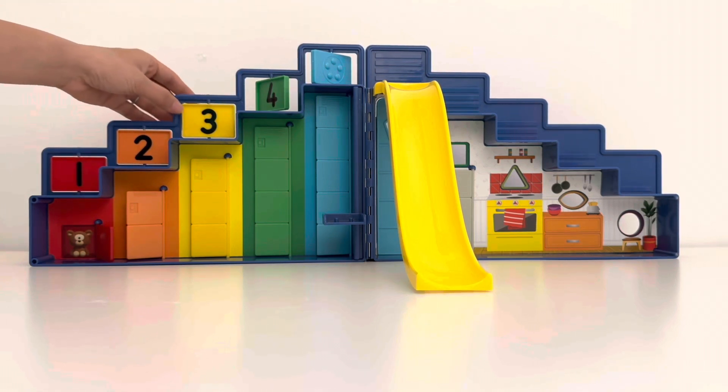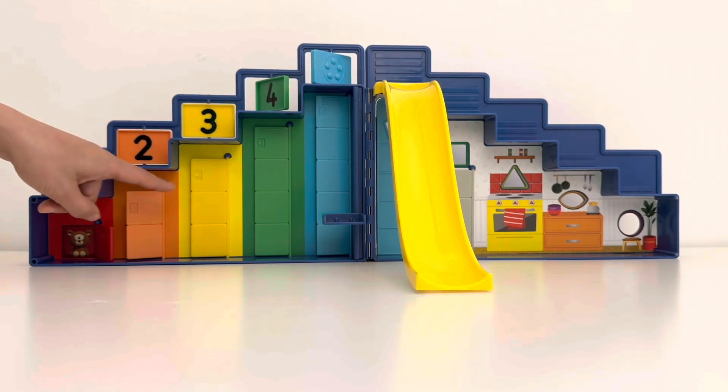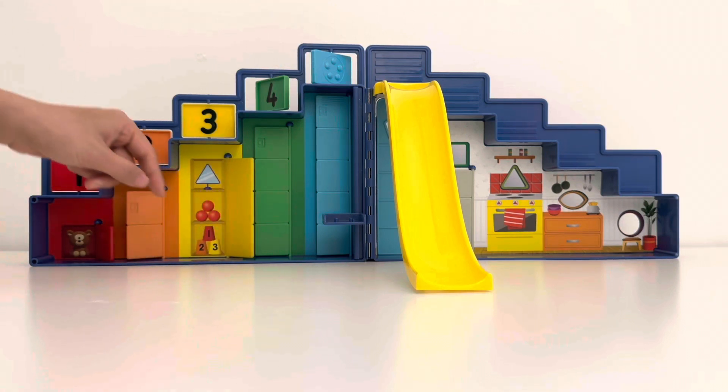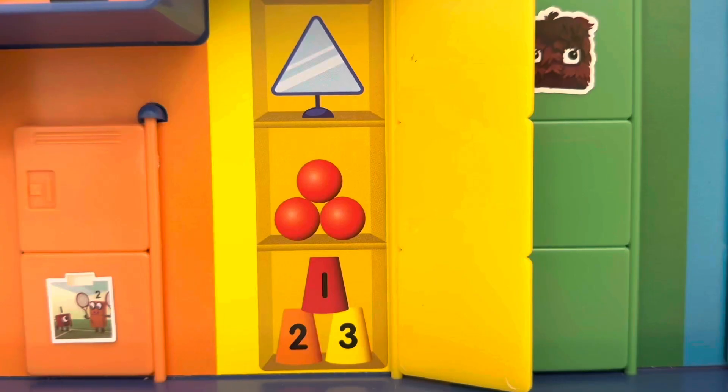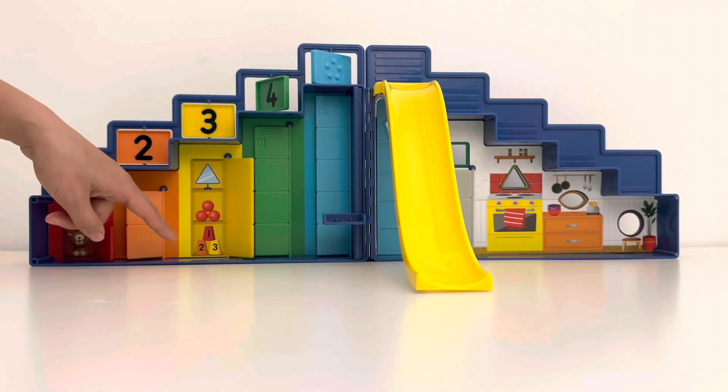Next we have three's locker. It's yellow. Let's open it up and she has a triangle shaped mirror, three red juggling balls and three stacking cups for her tricks.